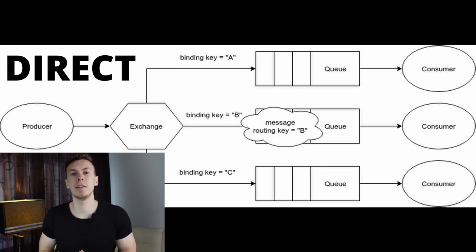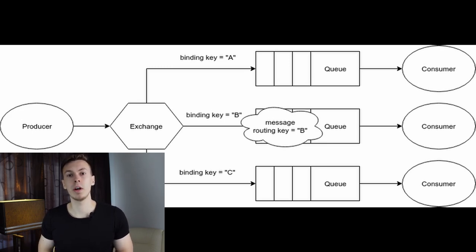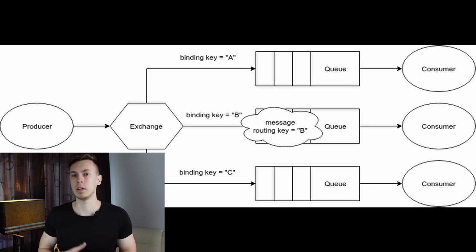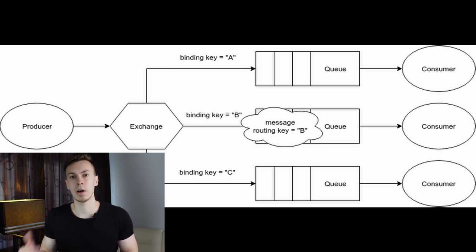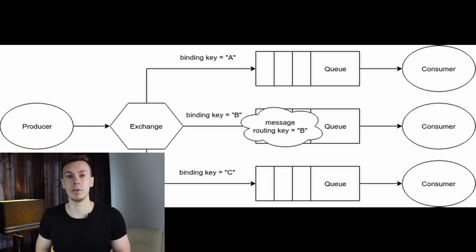These components are difficult to understand without examples, but now you'll see them in practice. The first exchange type is direct. An exchange with this type sends messages to the queue where the routing key equals the binding key. Looking at the picture, we have one exchange and three queues: the first bound with binding key A, the second with B, and the last with C. When the producer sends a message with routing key B, only the second queue receives it.